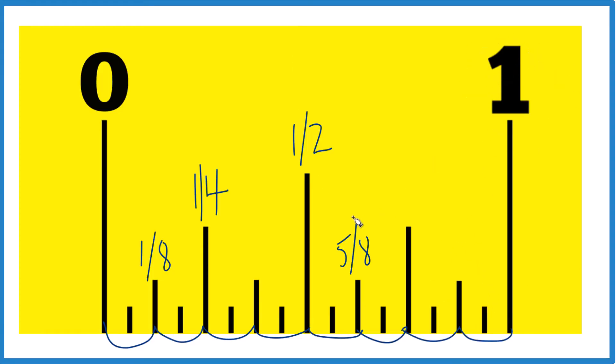So that's how you do it. This is Dr. B, finding 5 eighths on a ruler or a tape measure. Thanks for watching.